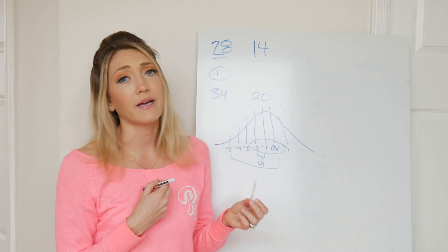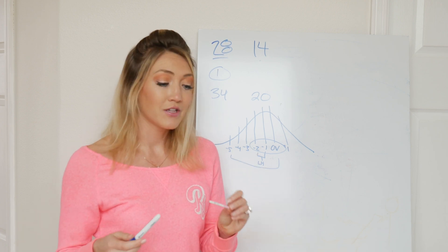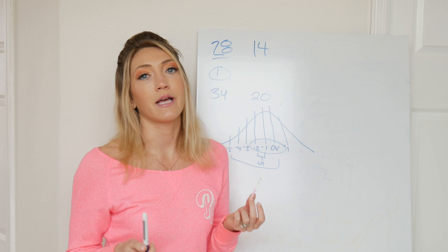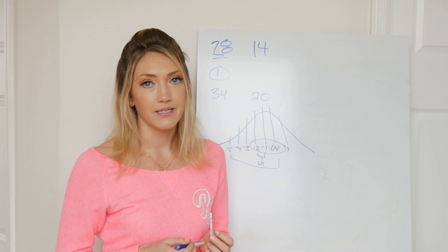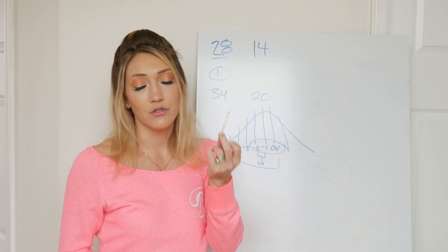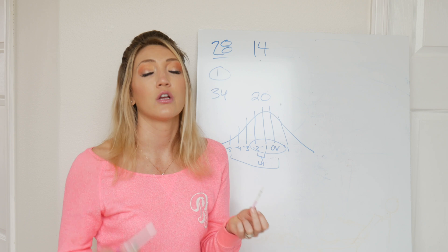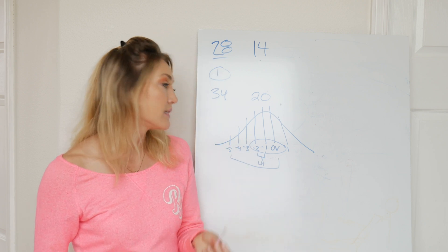For me, my cycle varies quite a bit from 34 to 44 days. So, for me, I have to start testing about 10 days before, and I also test two times a day. So, that's 20 strips per cycle, which is why I love these strips, because they're only 20 cents each versus those super expensive ones from Walmart. So, I highly recommend these.